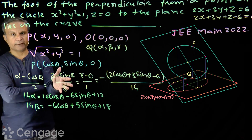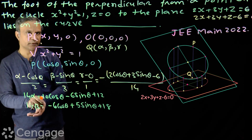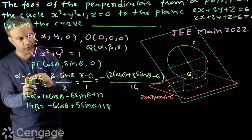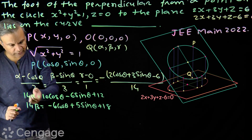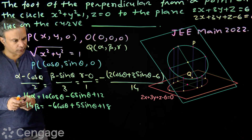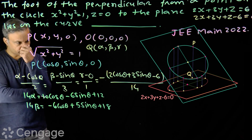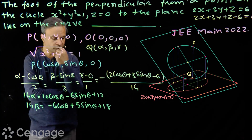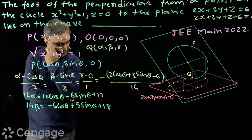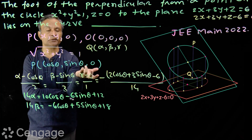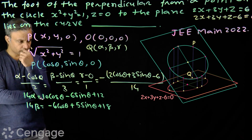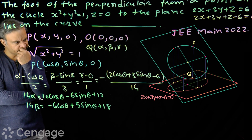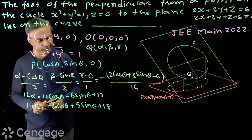Now we have to eliminate θ. We will get the values of cosθ and sinθ in terms of α, β, and γ. From the comparison, we get: 14α = 10cosθ − 6sinθ + 12, and 14β = −6cosθ + 5sinθ + 18. We now have two equations in cosθ and sinθ. Our aim is to eliminate θ, so we find the values of cosθ and sinθ and use cos²θ + sin²θ = 1.